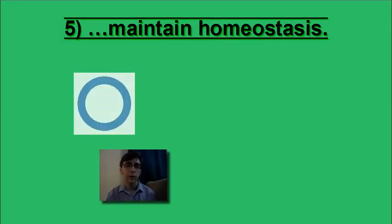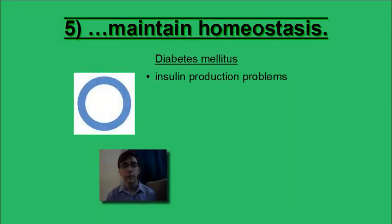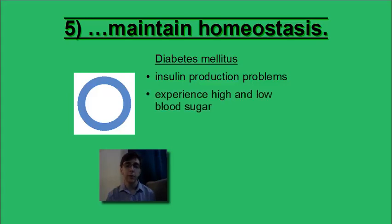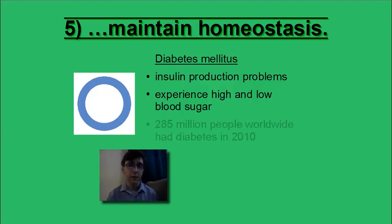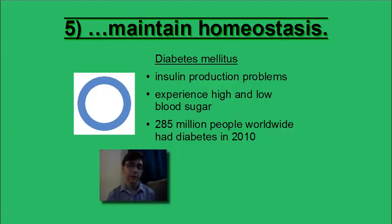On a side note, diabetes mellitus is a disease in which people experience insulin production problems. People with this disease often have high and low blood sugar levels, which can be quite uncomfortable and even deadly. 285 million people worldwide had diabetes in 2010, which is a pretty significant portion of the world population.